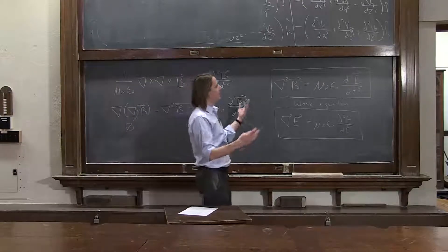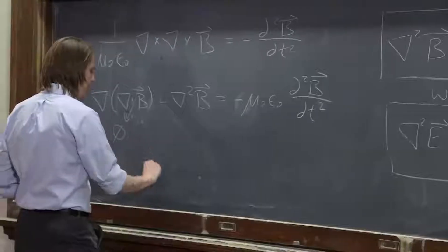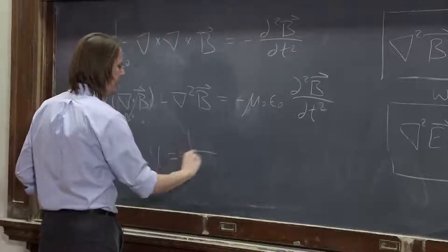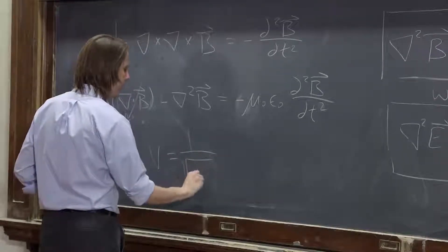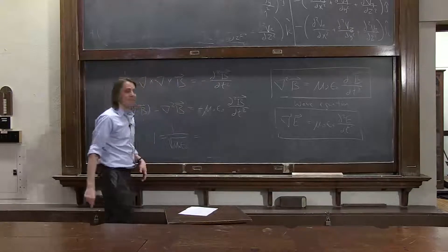And when he did, he said, well, how fast do they go? Well, we know from working with waves that the velocity would be one over the square root of mu naught epsilon naught. And he knew that was really fast.